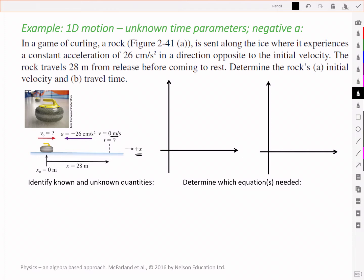Let's identify the unknown and known quantities here, and we'll pull them out like we did before, in a sort of table format or column format. T0 is zero, x0 is also zero because we've defined it that way, and our v0 is unknown. But we do know that we've got an acceleration of negative 26 cm per second squared.